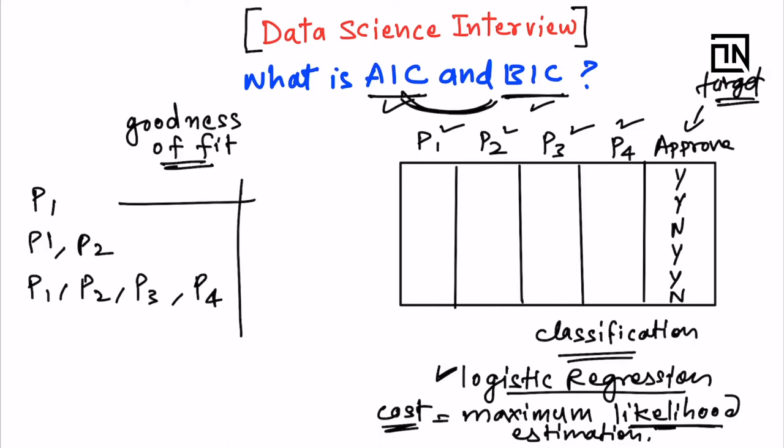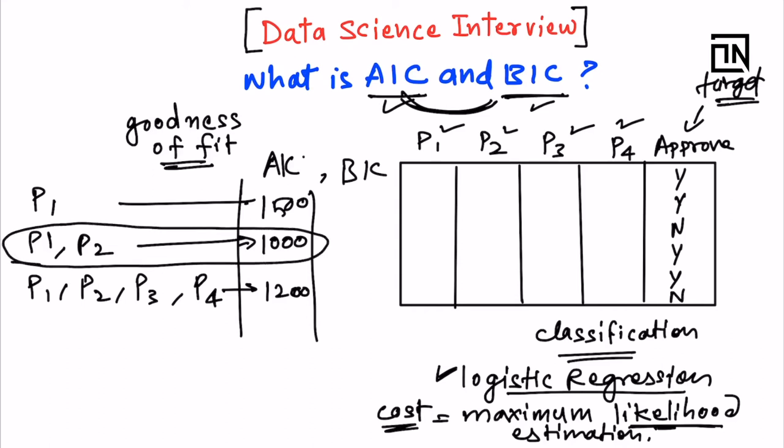So for each of these scenarios you have measured the AIC and BIC both. Let me just take the example of AIC. Let's say for predictor one, the AIC came out to be 1500. Here it came out to be 1000, and here it came out to be let's say 1200. So you select that model which constitutes of two predictors, because this model is giving you the lowest AIC out of all the choices.